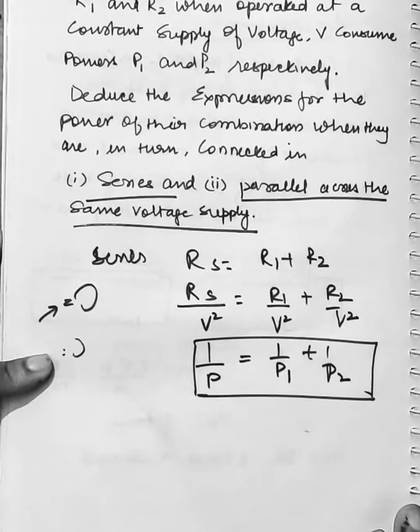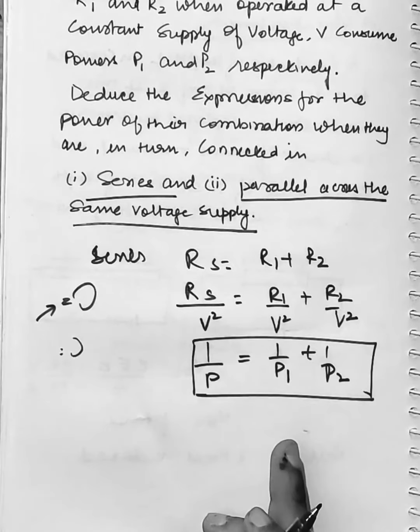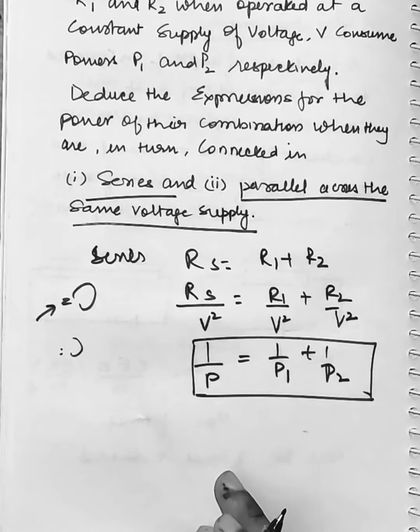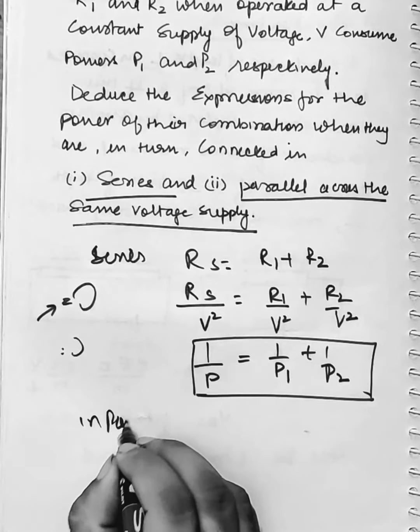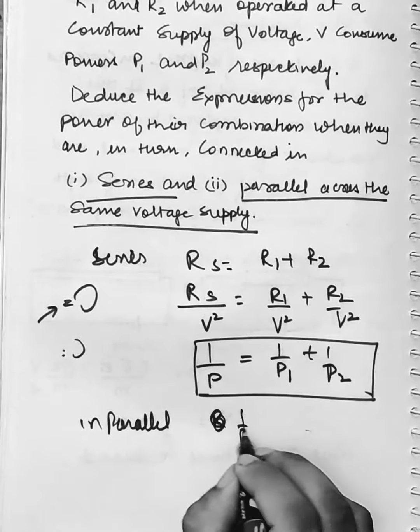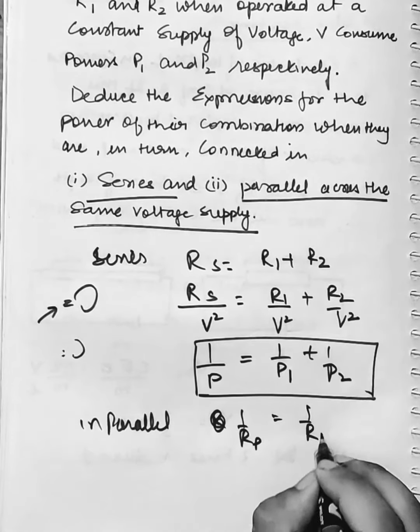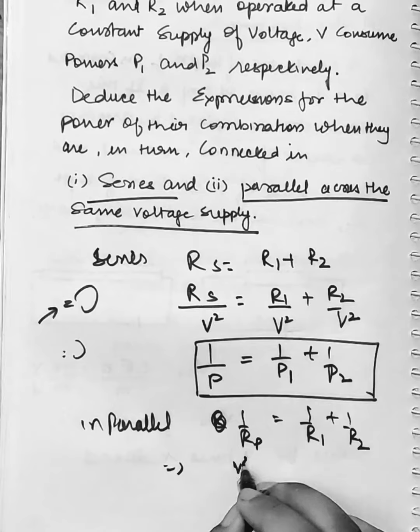If we take care of the same voltage source, when we use the same voltage source, then deduce the expression for parallel. In case of parallel, 1 by Rp is equal to 1 by R1 plus 1 by R2.